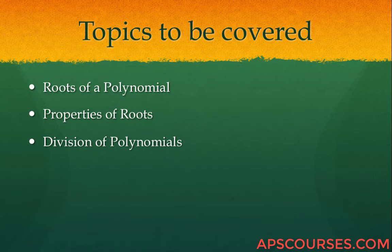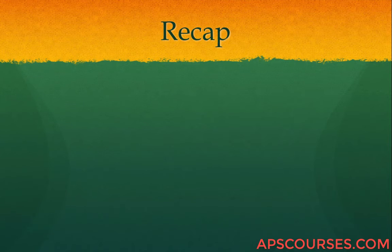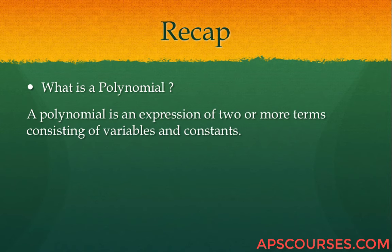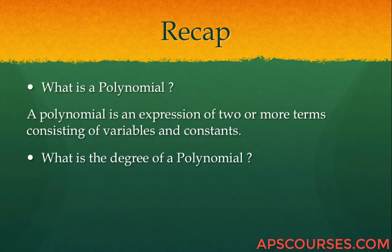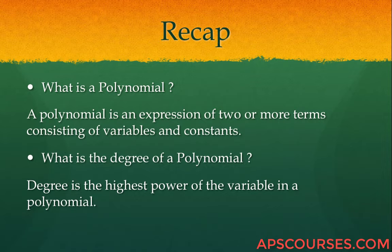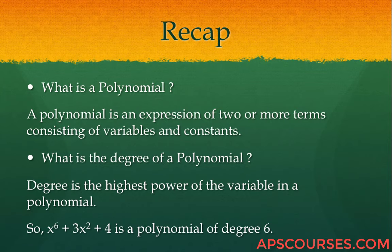Let us start with a small recap of polynomials. A polynomial is an expression of two or more terms consisting of variables and constants. The degree of a polynomial is the highest power of the variable. So in the polynomial x to the power 6 plus 3x squared plus 4, the degree is 6.